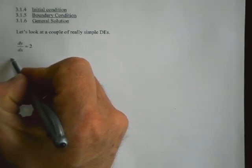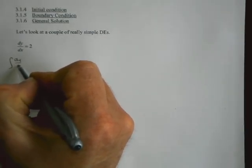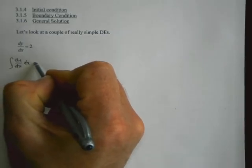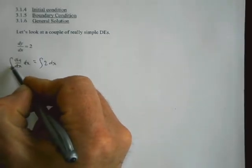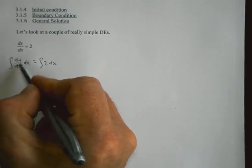To solve this thing, the simplest thing to do is just to integrate both sides dx. So if integral and a derivative undo each other, that's just y, and this we're going to have 2x plus C.